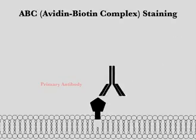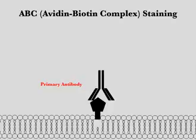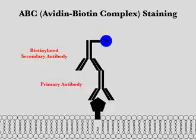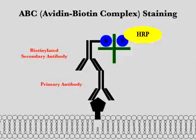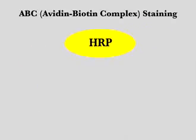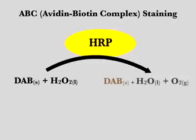Avidin-biotin complex staining begins with the binding of the primary antibody to the target antigen. A secondary antibody conjugated with biotin binds to the primary antibody. Avidin protein can bind to the biotinylated antibody, and a peroxidase conjugated to biotin can then bind to a free space on the avidin molecule. Horseradish peroxidase catalyzes the reaction between DAB and hydrogen peroxide, producing a brown DAB precipitate, water, and oxygen gas.